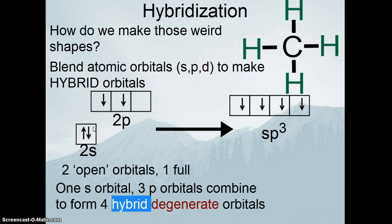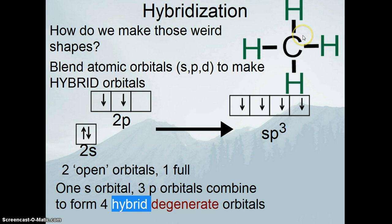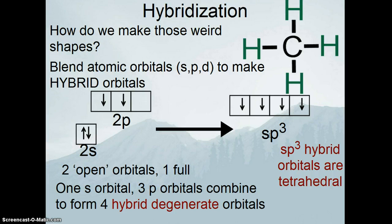However many orbitals we use in construction is how many we get in the end. Now we have four orbitals, all half-filled with one electron in them, all ready to overlap — this one with the 1s orbital of hydrogen, this one with the 1s orbital of hydrogen, and so on. The shape of an sp³ set of hybrid orbitals is tetrahedral in geometry — a one-to-one correlation between sp³ hybridization and a tetrahedral electron domain geometry.